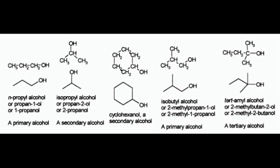The electron activity of oxygen affects the charge of both oxygen and hydrogen, which creates an electric dipole, making a separation between the positive and negative charges. There are three types of alcohol molecules: primary, secondary, and tertiary. The primary is when the OH only connects to one other molecule, the secondary is when it connects to two, and the tertiary is when it connects to three.